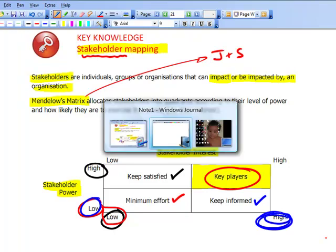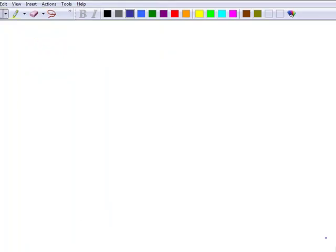What I'd like to do is to talk briefly through an example. Let's have a look at BA, British Airways, and do stakeholder analysis, Mendelow's matrix for the international airline British Airways.